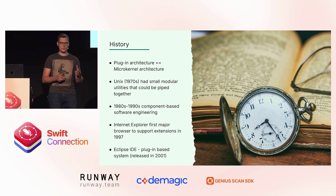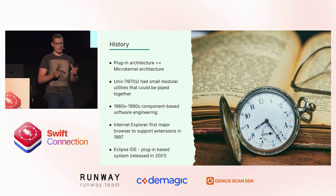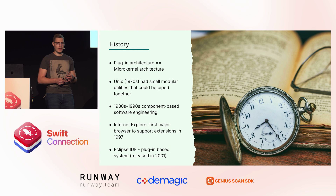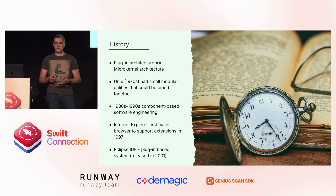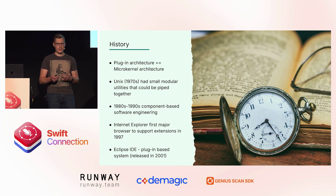Later on, there were two decades of component-based software engineering attempting to make different components and compose things together. Then in 1997, Internet Explorer was the first major browser that had extensions to add additional functionality. And in 2001, Eclipse was the IDE that was, from the ground up, built around plugin architecture — Eclipse as a baseline is just a text editor and all functionality is added via plugins.